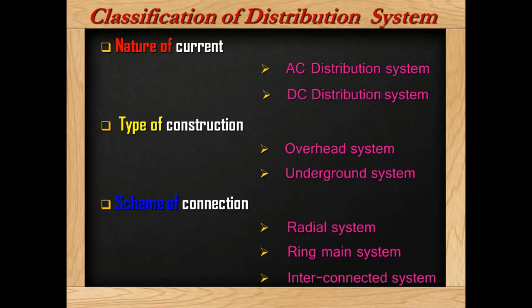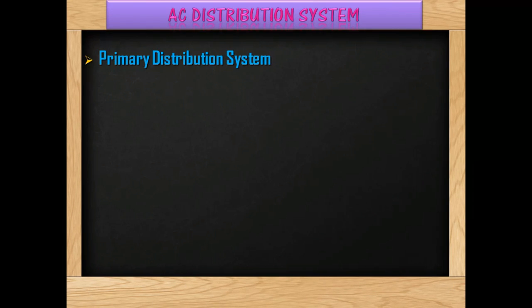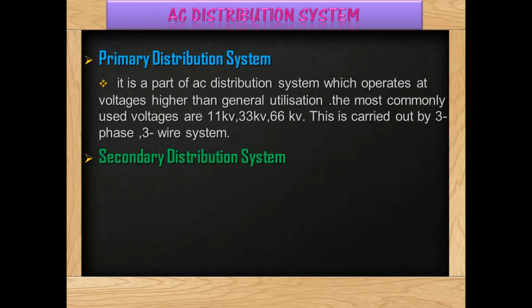Let us discuss about AC distribution system. Primary distribution system and secondary distribution system are the two parts in the AC distribution system. The primary distribution system is a part of AC distribution system which operates at voltage higher than general utilization. The most commonly used voltages are 11 kV, 33 kV, and 66 kV. This is carried out by 3-phase 3-wire.